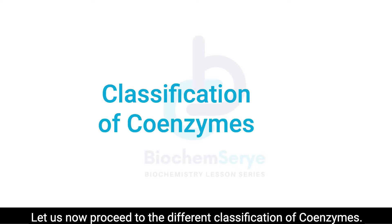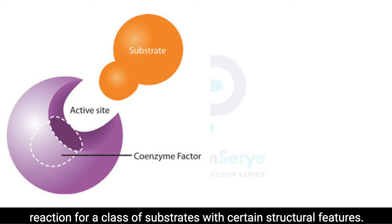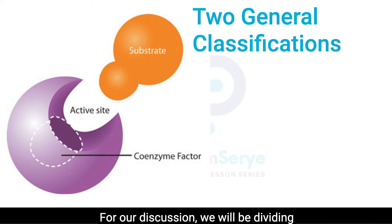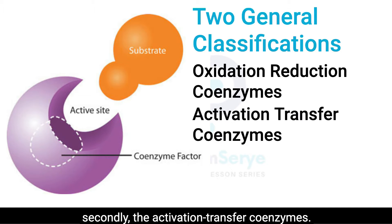Let us now proceed to the different classification of coenzymes. Each coenzyme is involved in catalyzing a specific type of reaction for a class of substrates with certain structural features. For our discussion, we will be dividing coenzymes into two general classifications. First, the oxidation-reduction coenzymes, and secondly, the activation transfer coenzymes.